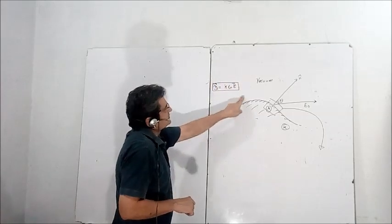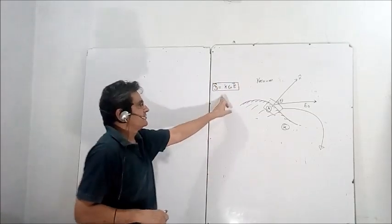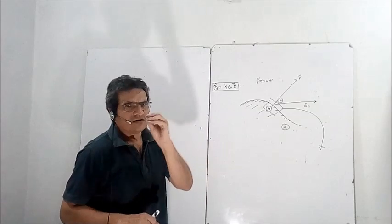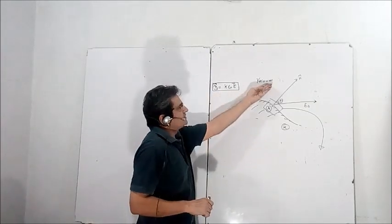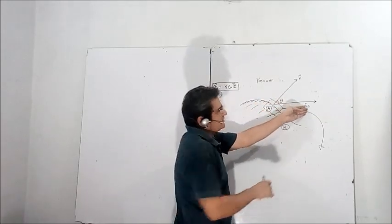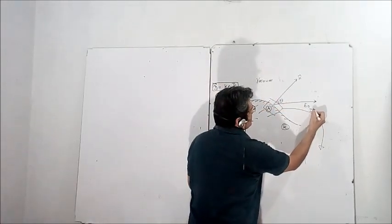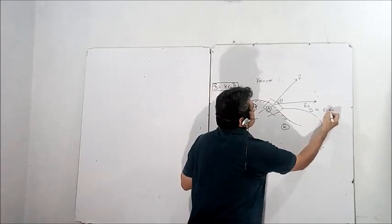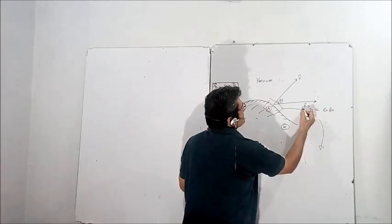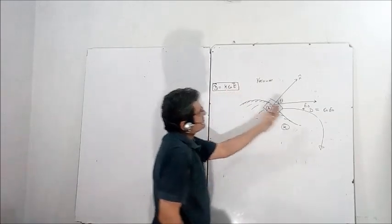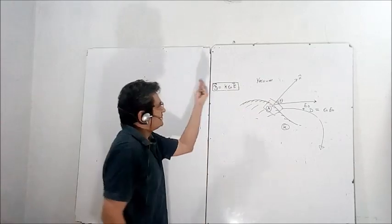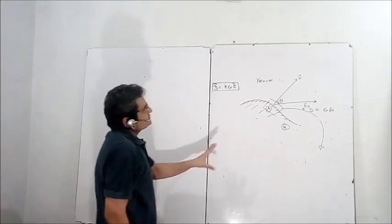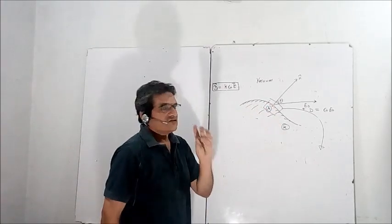The displacement vector is a very important concept used in boundary conditions. The displacement vector is straightforward: if the electric field on one side is E₀, then the displacement vector for that region is K·ε₀·E₀, where K is the dielectric constant of that region. So the electric field of a region multiplied by the K of that region gives you the displacement vector.